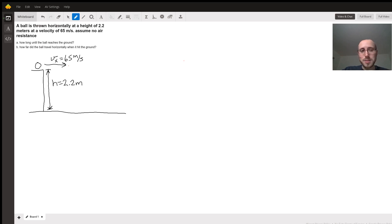First part, how long does it take for the ball to reach the ground? And second part, how far did the ball travel horizontally when it hits the ground? So I drew out the problem here on the side. First thing we're going to do is realize that the motion in the x direction and the y direction are independent of each other. So we can actually tackle parts A and B separately.